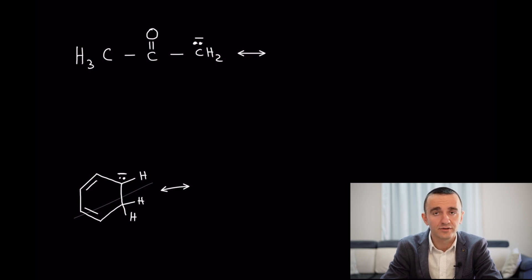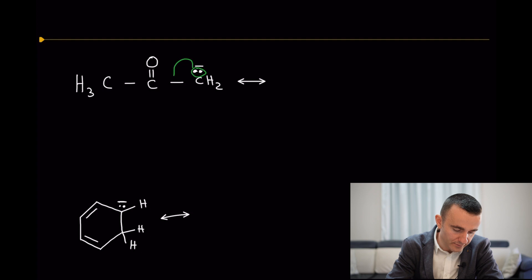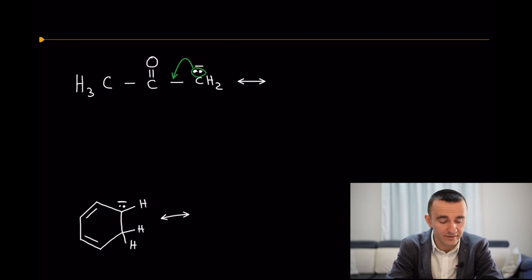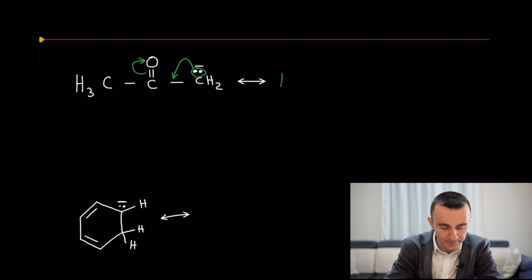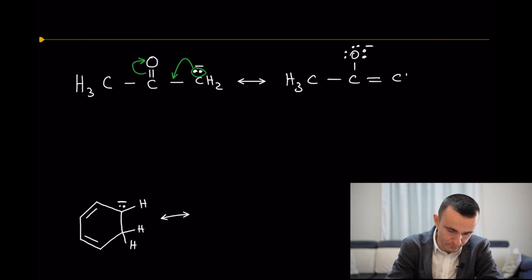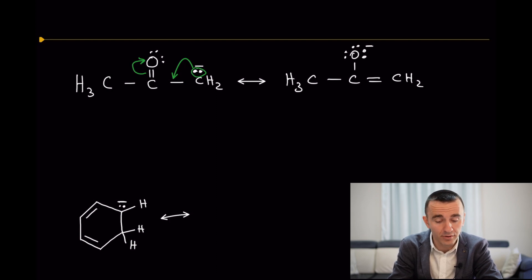Resonance structures are simple to draw. The only difference between two resonance structures is the movement of lone pairs and pi bonds. As you can see here, this lone pair is capable of moving to form a double bond. In order to maintain four bonds on carbon, you move one pi bond to the oxygen atom. The only things that changed are the movement of the lone pair, the creation of a pi double bond, and the movement of a pi bond to the oxygen atom.